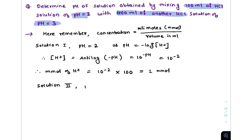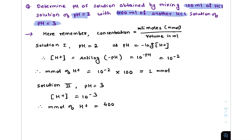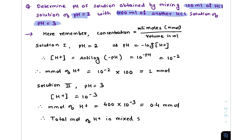For solution 2, the volume is 400 ml and pH is 3, so H⁺ concentration equals 10⁻³. Millimoles of H⁺ equals volume multiplied by concentration: 400 ml × 10⁻³, which equals 0.4 millimole of H⁺ for solution 2.